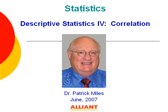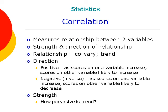In this class, we will discuss the key statistical concept. A correlation is a measure of the relationship between two variables, or two sets of scores, and it indicates the strength and direction of that relationship.